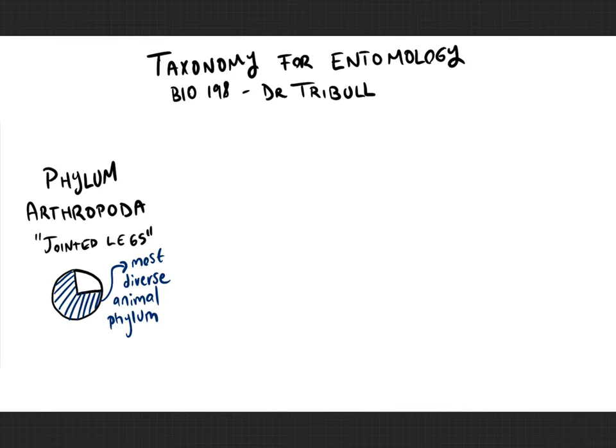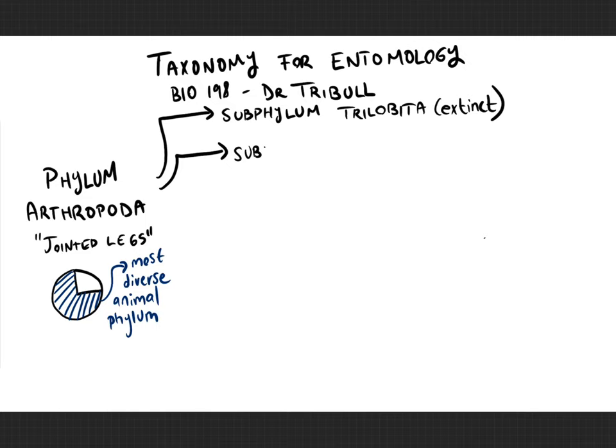We also talked about how you can divide the phylum Arthropoda into five subphyla. The first of those subphyla is actually extinct — that is the subphylum of the trilobites. The second subphylum is the Chelicerata, which includes scorpions, spiders, and ticks.